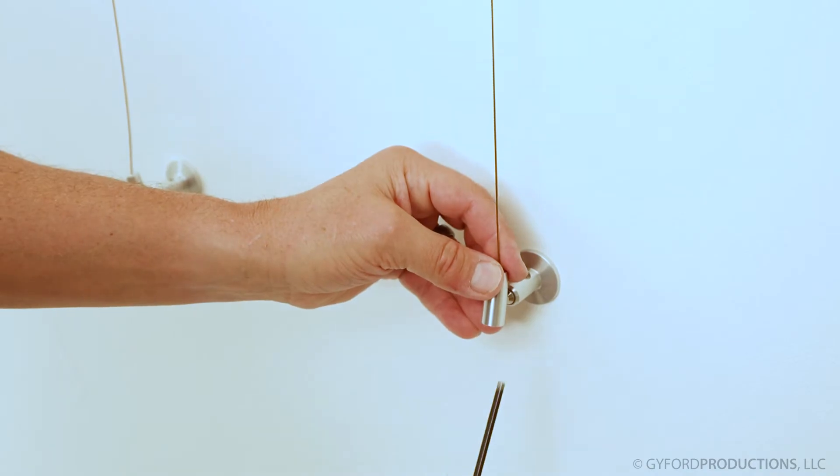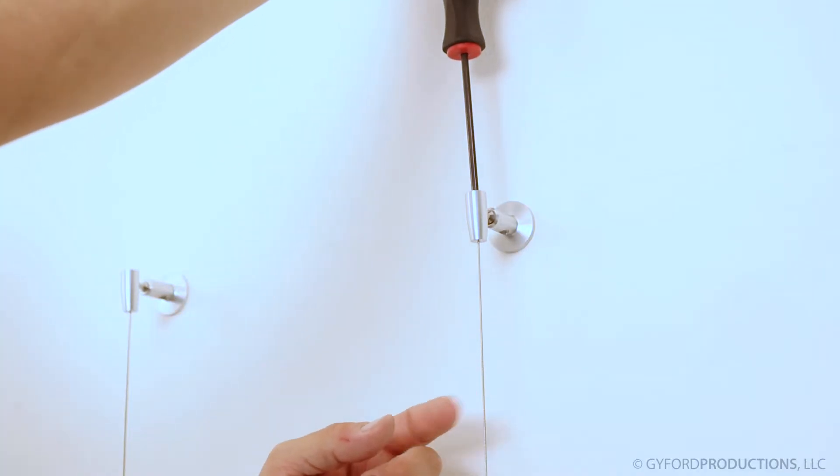Now to tension the wires, simply turn the cone point set screws on the ends of each housing until the wire is tight.